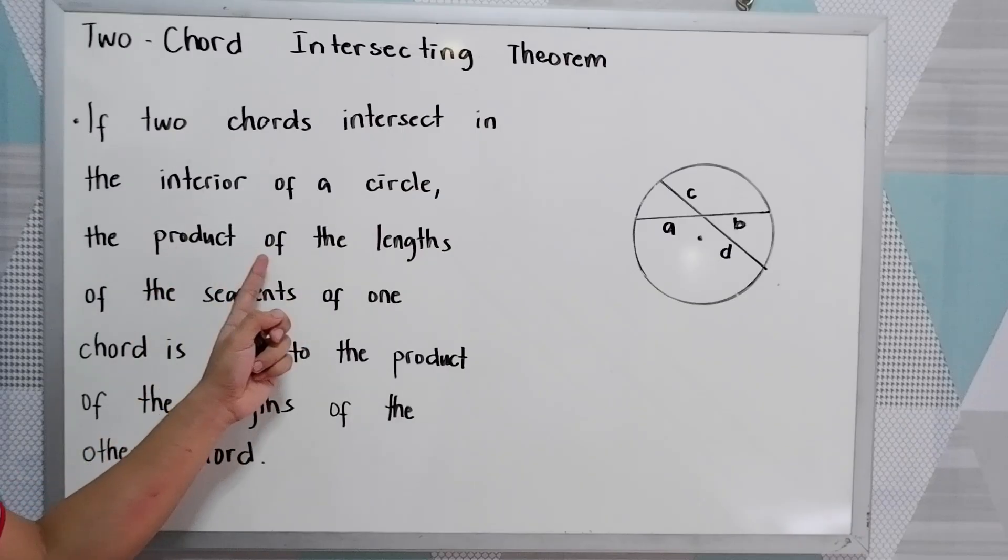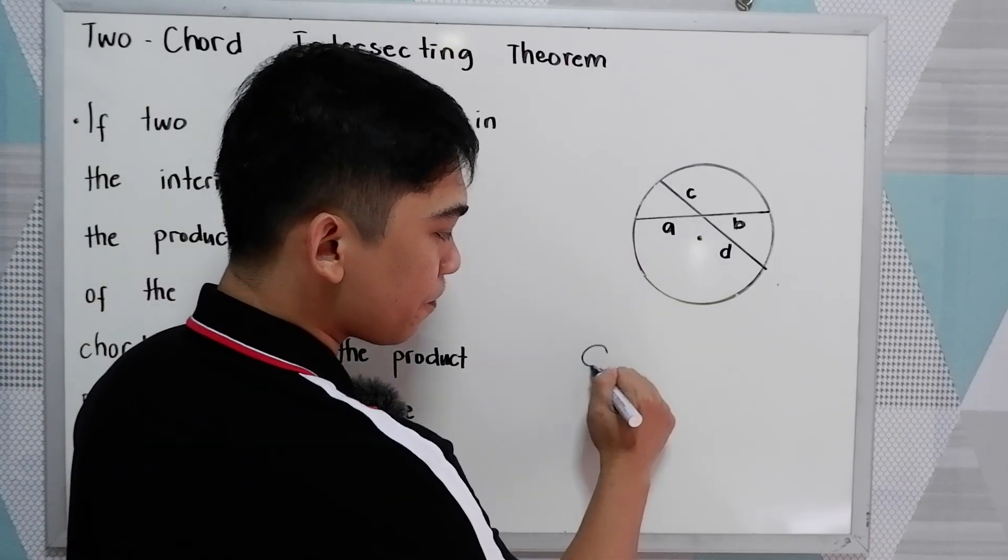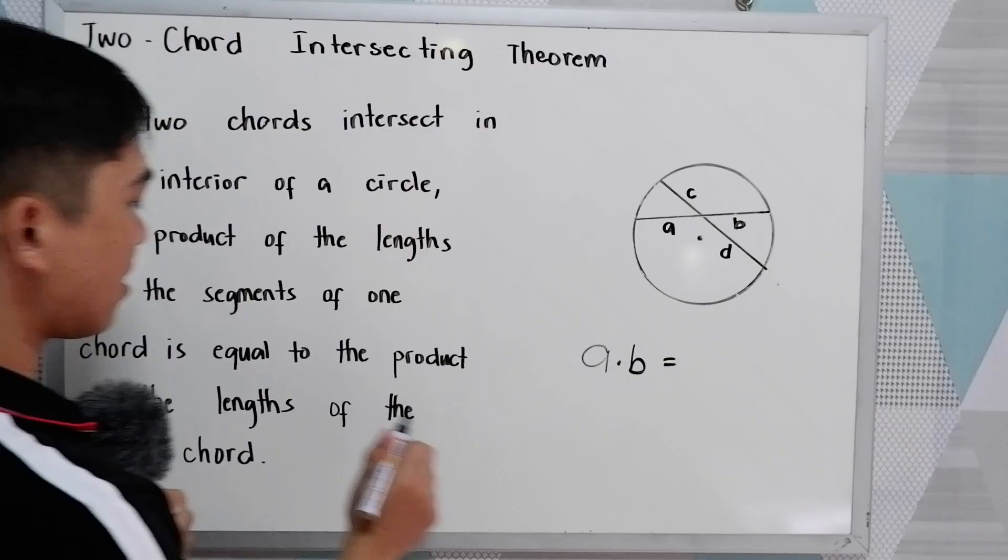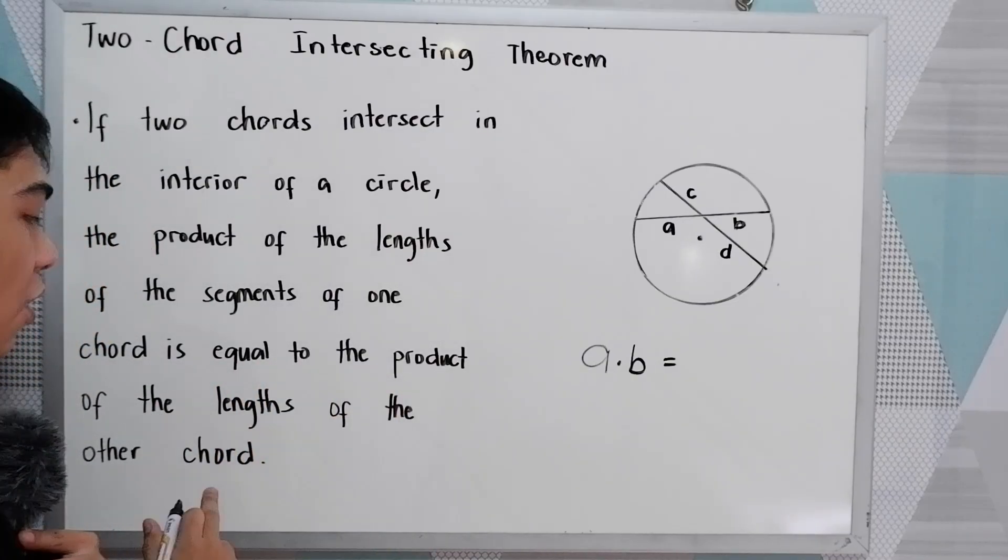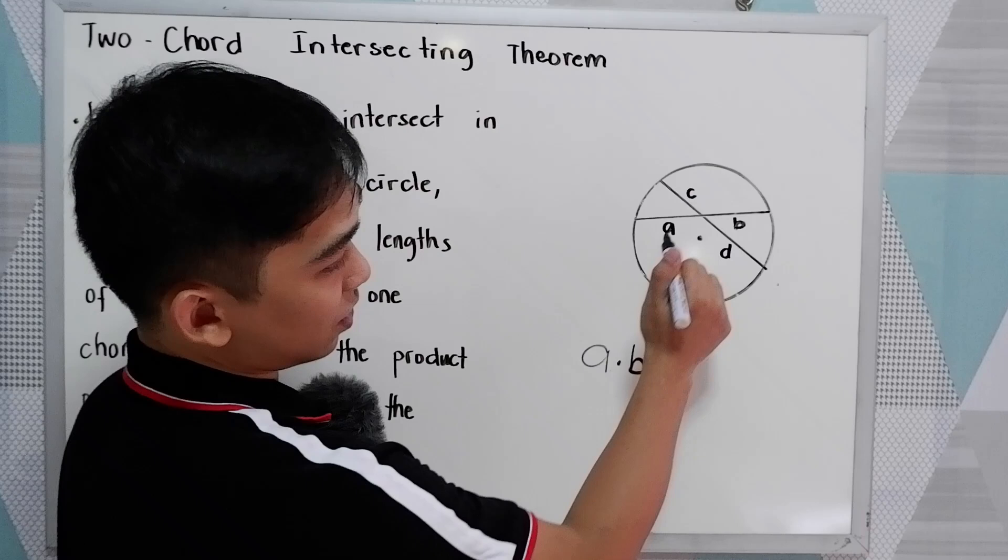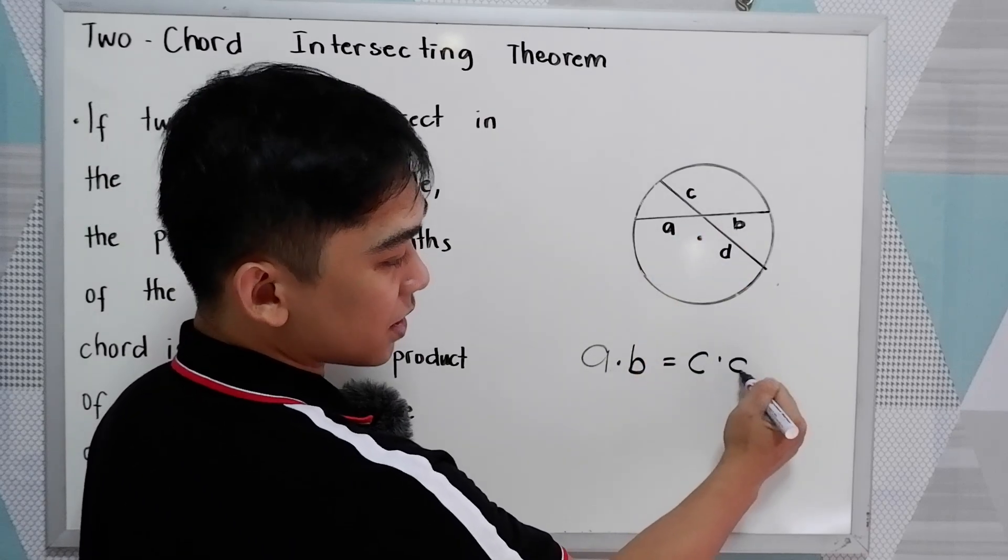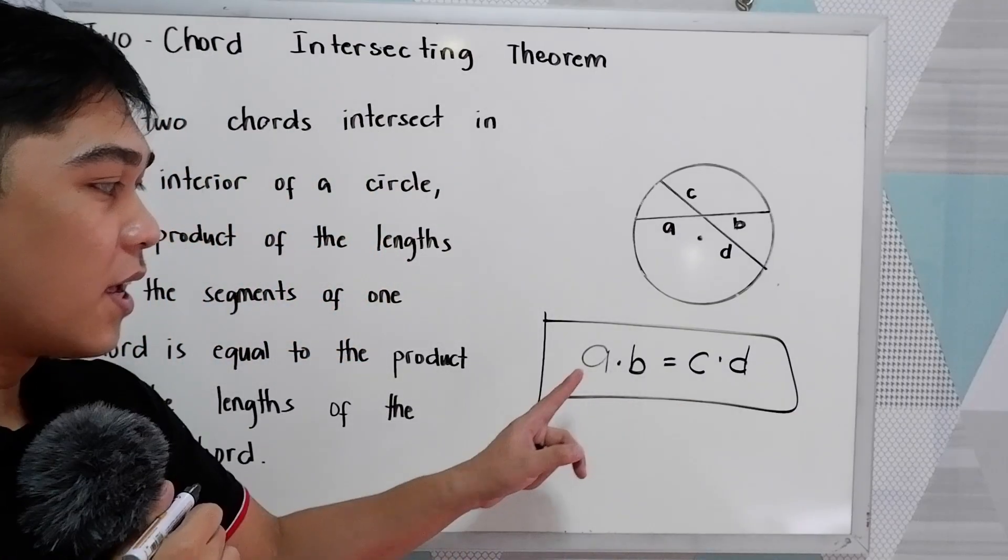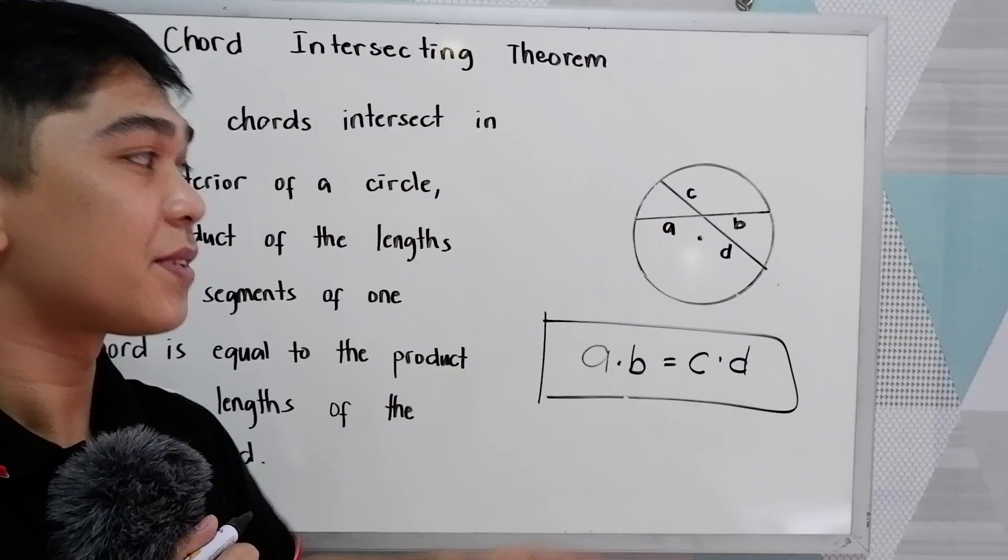The product of the length of the segments of one chord, the product, let's say, A times B is equal to the product of the length of the other chord. A times B is equal to C times D. This will be our formula.